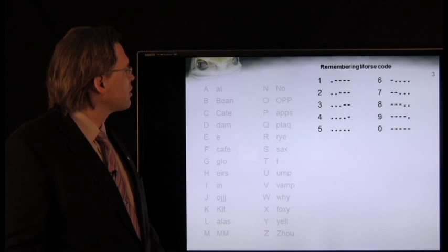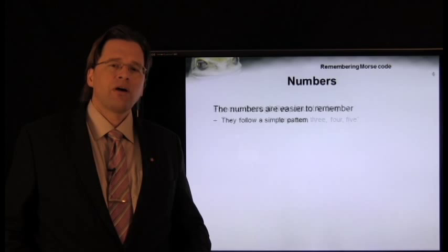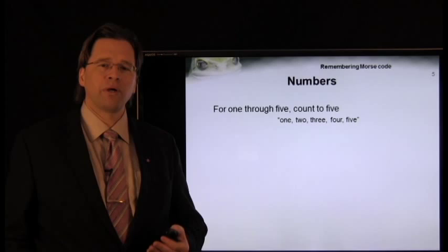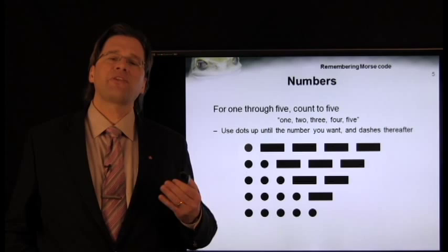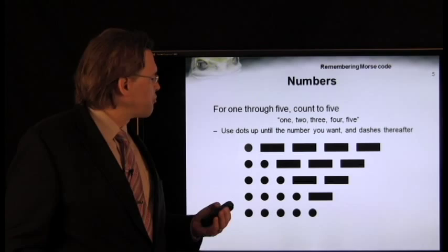Next we're going to look at numbers. Numbers follow a really easy pattern. All you have to do is remember, for the numbers 1 through 5, is to count to 5: 1, 2, 3, 4, 5. The only thing is, you use a dot up until the number you want, and you use dashes thereafter. For example, the Morse code for 2 is 1, 2, 3, 4, 5.